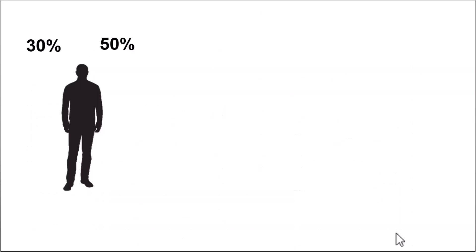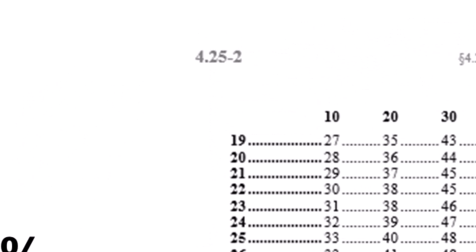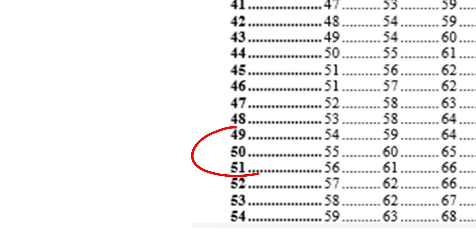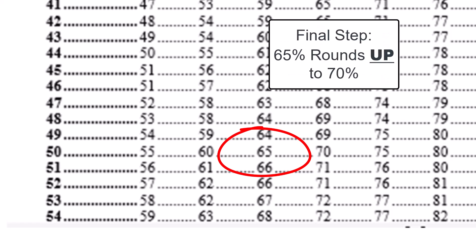Suppose a person has two ratings, 30% and 50%. The first thing you do is you put them in order of severity. Step two, you're going to read down the left-hand side of the table until you find 50%. And then, step three, you read across that row to where it intersects with 30%. See, you get 65%. Then, since this person only has two ratings, we do the final step, which is rounding. And the 65% rounds up to 70%.